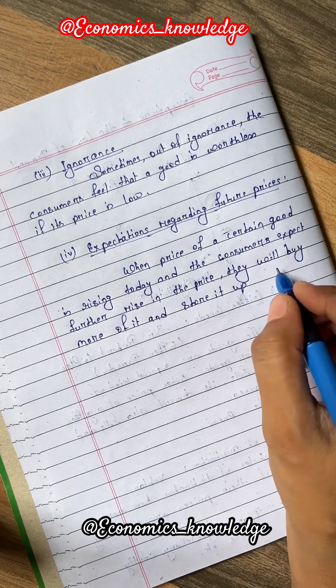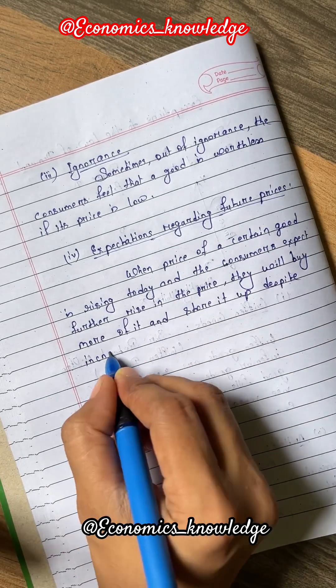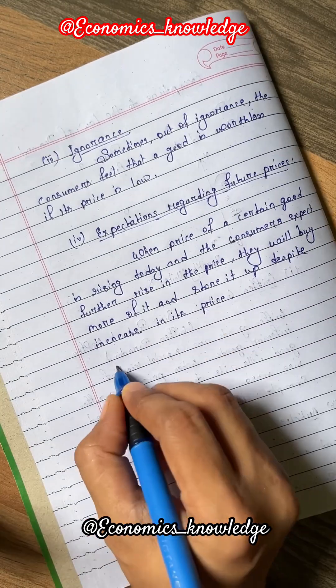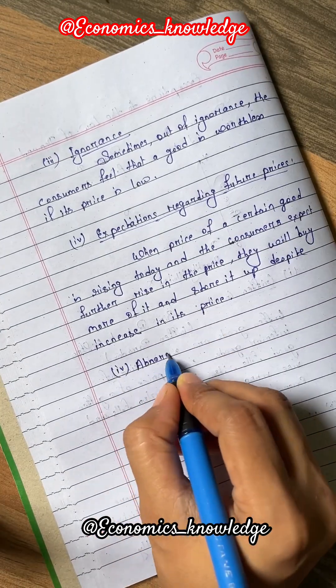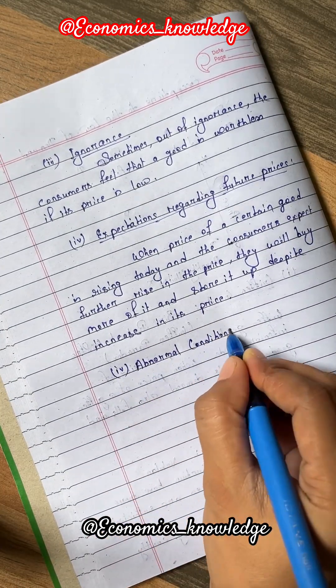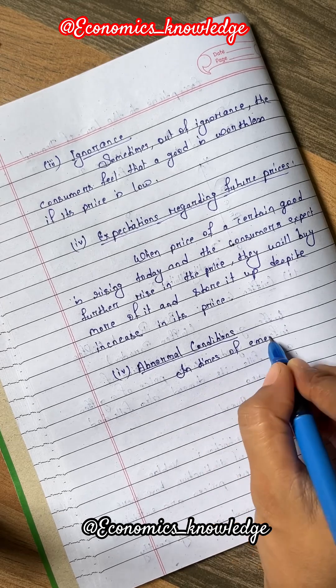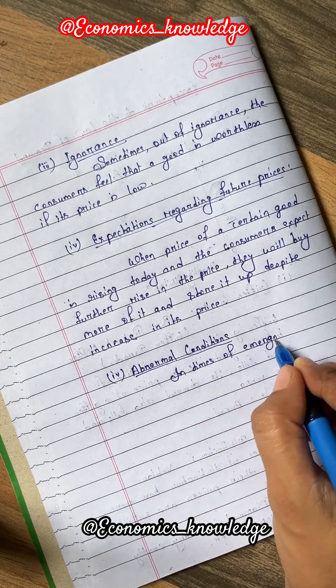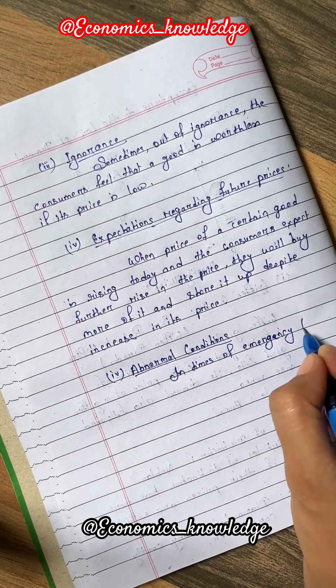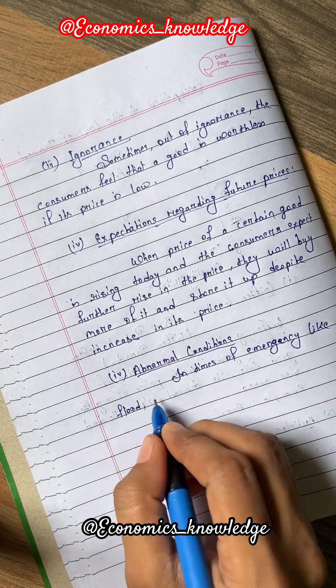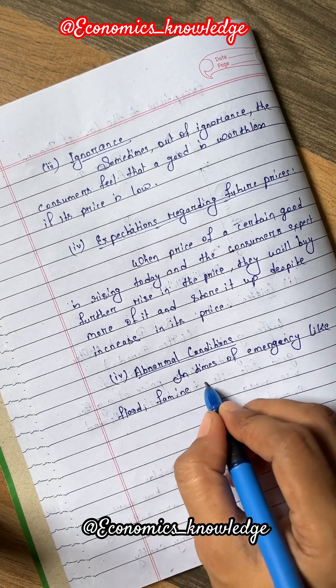Number 5, Abnormal Conditions. The law does not apply under abnormal conditions. In times of emergency like flood, famine, or war, the households do not behave in a normal way and consequently, the law of demand may not operate.